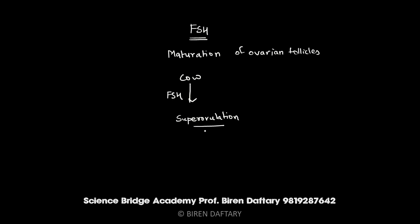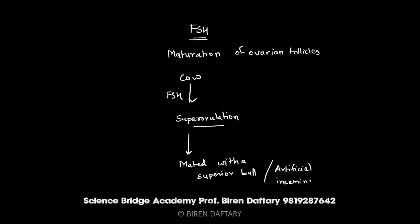When the cow is super ovulating, she is either mated with a superior bull — a bull with a very high rate of fertility — or artificial insemination is used to fertilize the ova. In artificial insemination, sperms are collected from a superior bull, stored, and then inserted inside the reproductive tract of the female when needed, allowing the sperms to fertilize the ova.